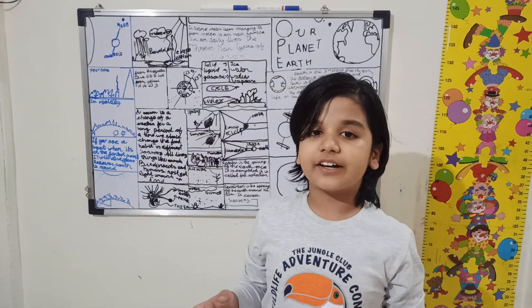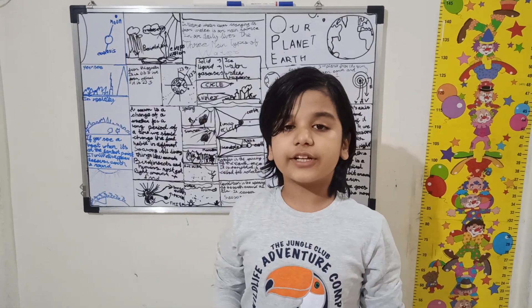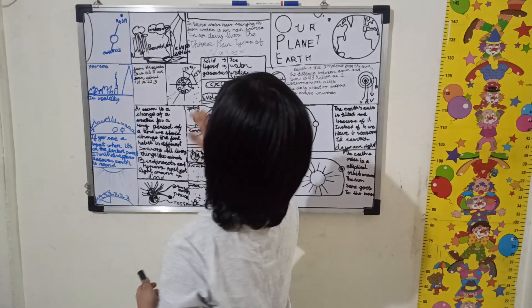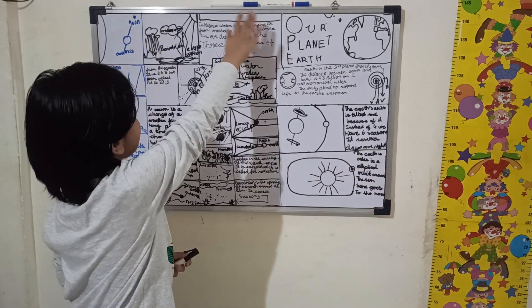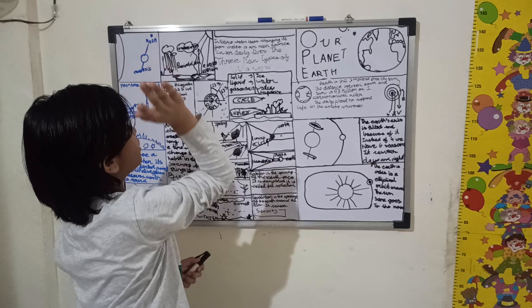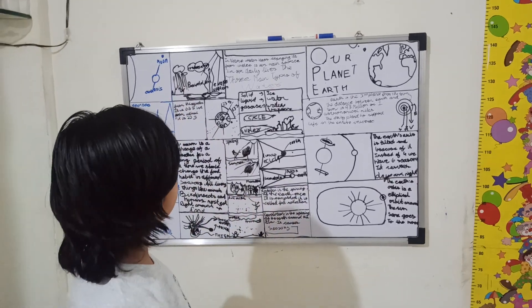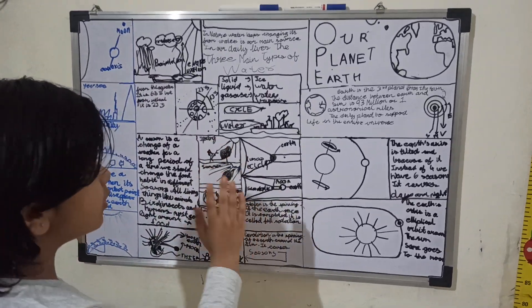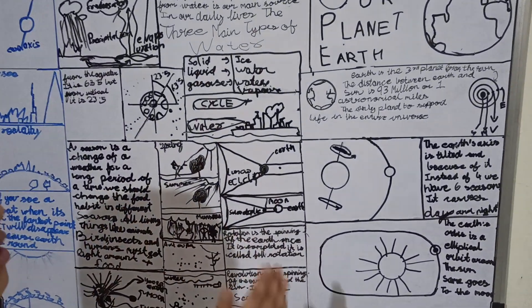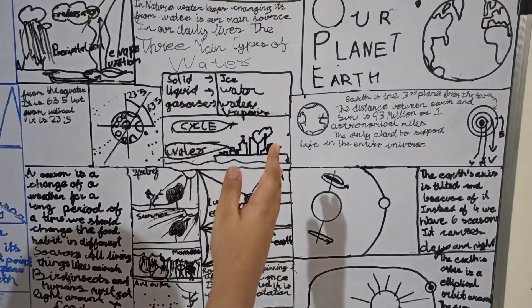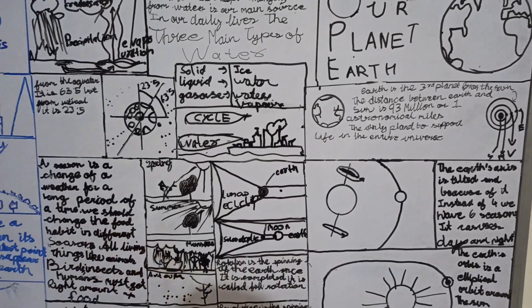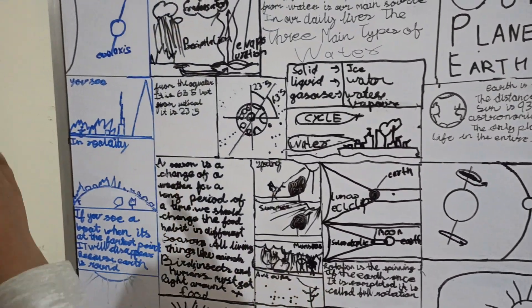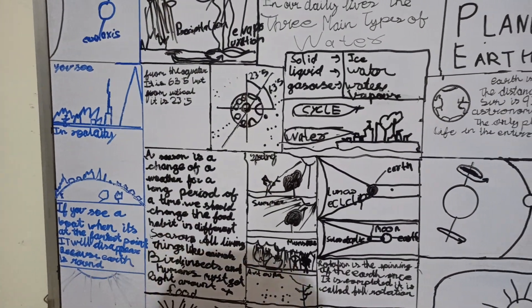Instead of studying just the Earth, we could even study the entire nature — like the water cycle, seasons, eclipses, rotation, revolution, and the shape of the Earth.